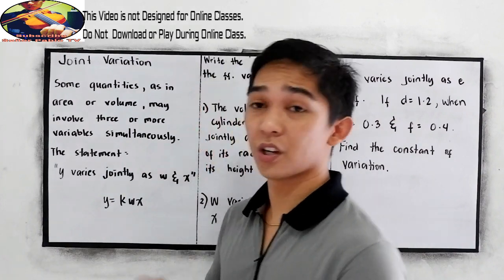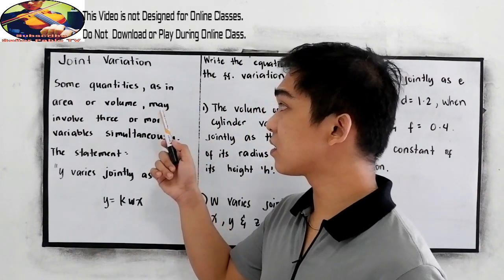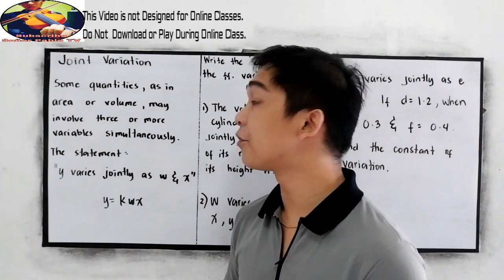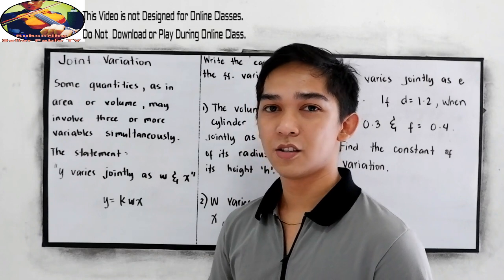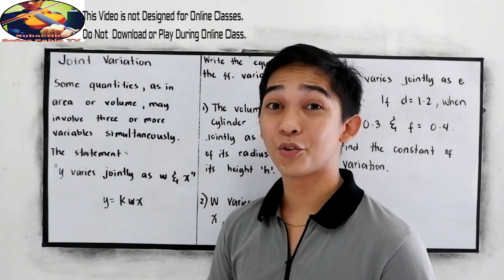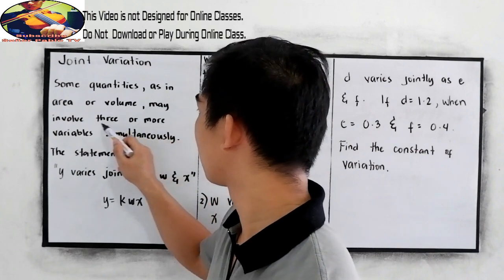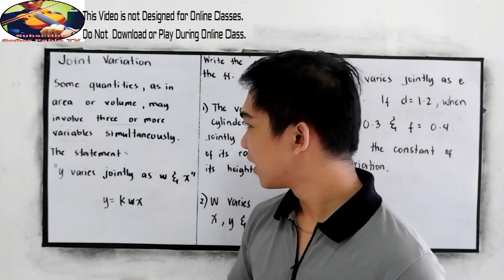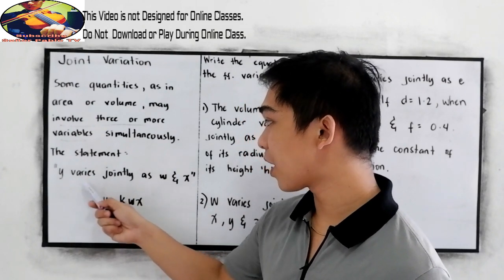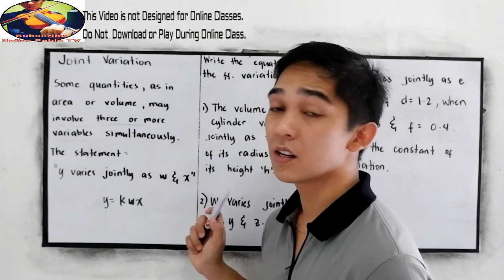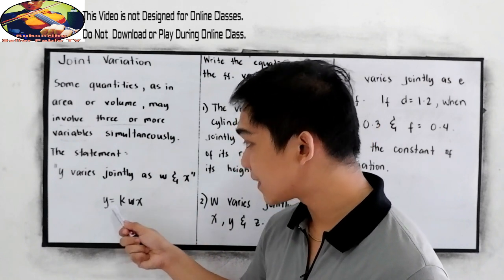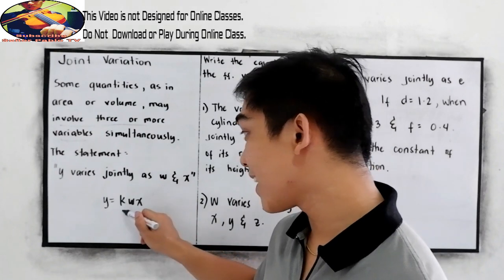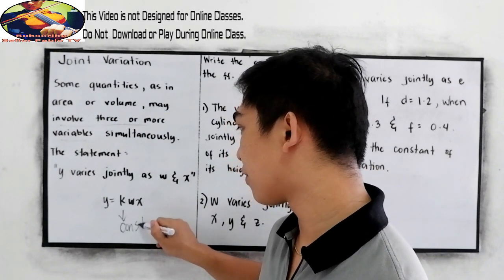In joint variation, some quantities as in area or volume may involve three or more variables simultaneously. The statement y varies jointly as w and x means y is equal to k times w times x, wherein k is our constant of variation.